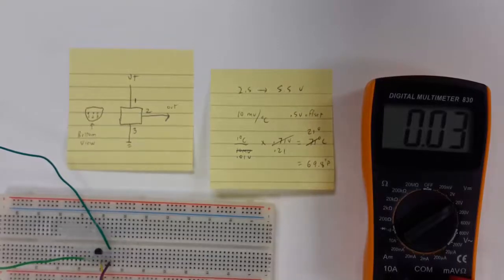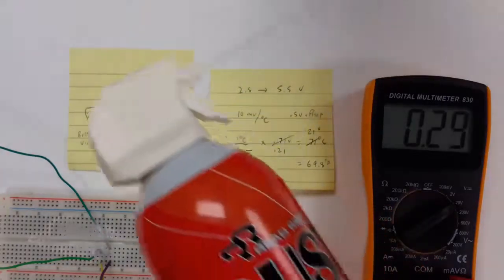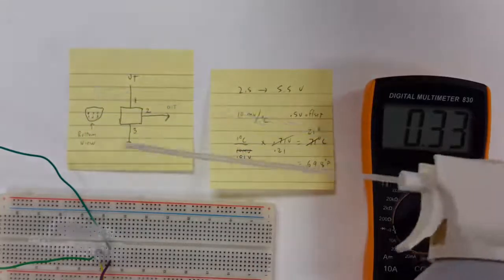If you take, for instance, 0.04, subtract off the half-volt offset, you come up with minus 0.46, which gives you a temperature of minus 46 degrees centigrade. And that translates to a temperature of about minus 50 degrees Fahrenheit, and that's pretty typical for this coolant material and how cold it can get.